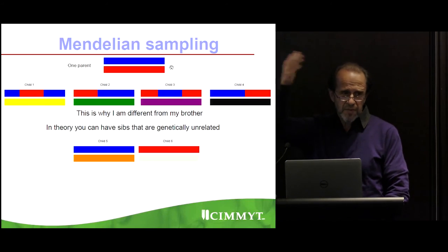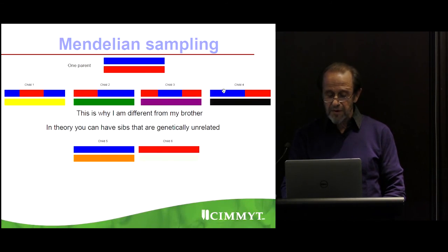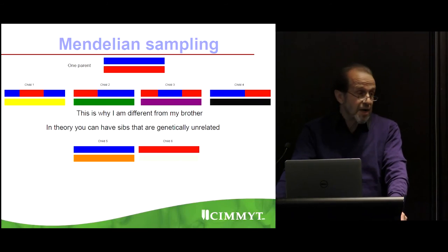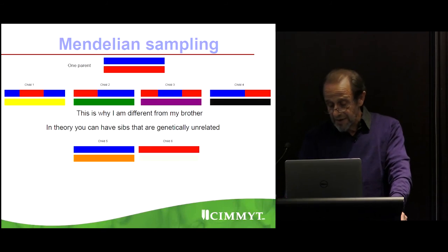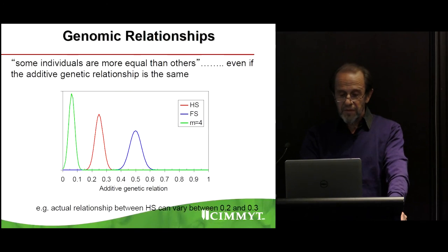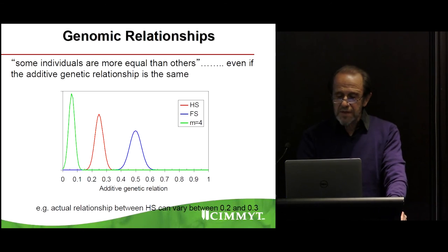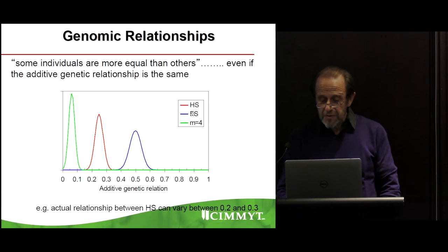Let's say we have one parent with offspring — a half-sib family: children one, two, three, and four. This is why I am different from my brother or sister, even though we are half sibs. In theory, you can have sibs that are genetically unrelated. The genomic relationship reveals that some individuals are more equal than others even if the additive genetic relationship from pedigree is the same. The actual half-sib relationship is not exactly 0.25 — there is a range — because the parents may or may not themselves be related.